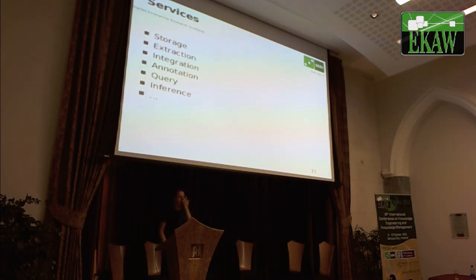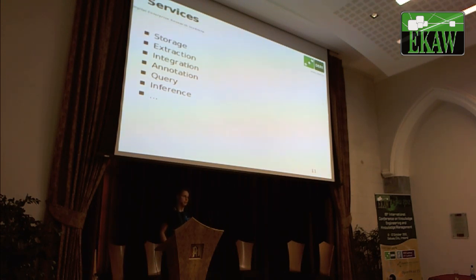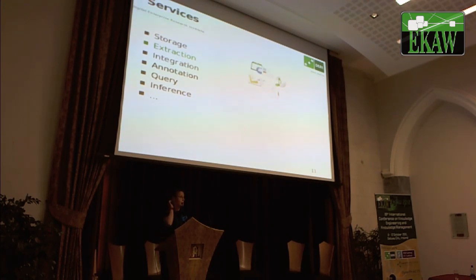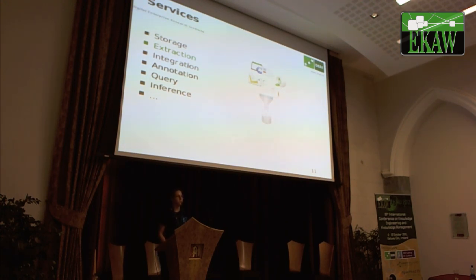Moving to the service layer — the three layers are fuzzy because, for instance, the storage service from the service layer could also be considered the data layer, since it handles the data. Storage can be either a semantic triple store, a database, or text files. There are systems which use all three, and systems that combine two of them. Extraction is a service that appears in all the surveyed systems — it crawls information from desktop applications and transforms it into a semantic form, feeding into the storage service.